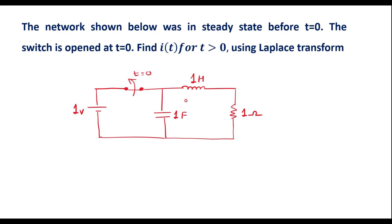This is the given network. It indicates that the switch will open at t equal to 0, meaning that before t equal to 0, the switch was in closed state. In closed state, the circuit has reached steady state. We know that at steady state, inductor acts like short circuit and capacitor acts like open circuit.